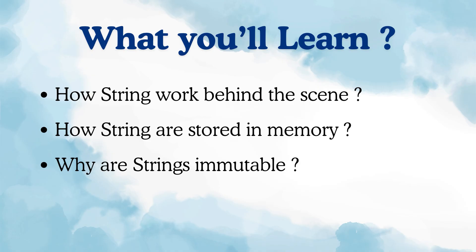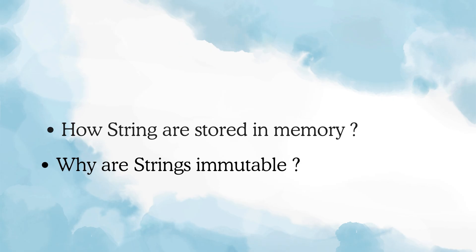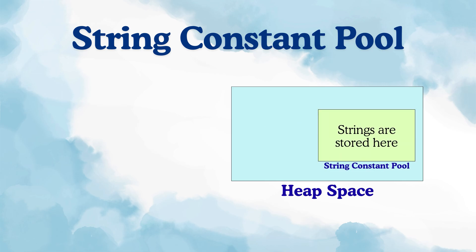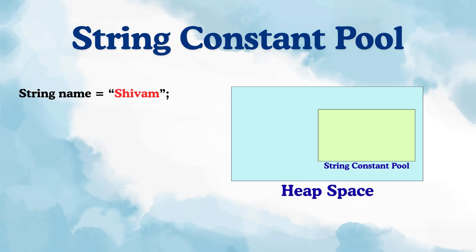To understand this, we have to learn about something called the string constant pool. In Java, all the objects are stored inside the heap memory. Now inside this heap, there is a special area that Java has created only for strings, and this area is called the string constant pool, or string literal pool. Now there are two ways to create strings: either you can directly create a string like 'String name = "shivam"', or you can create it using the new keyword like 'String city = new String("Delhi")'.